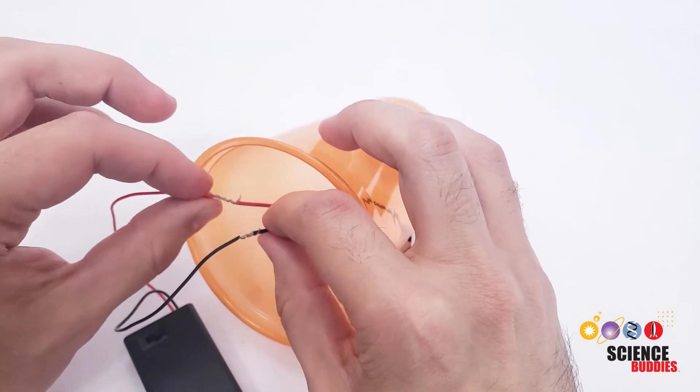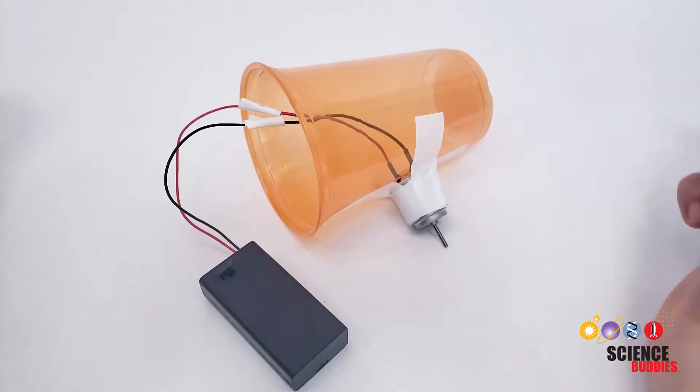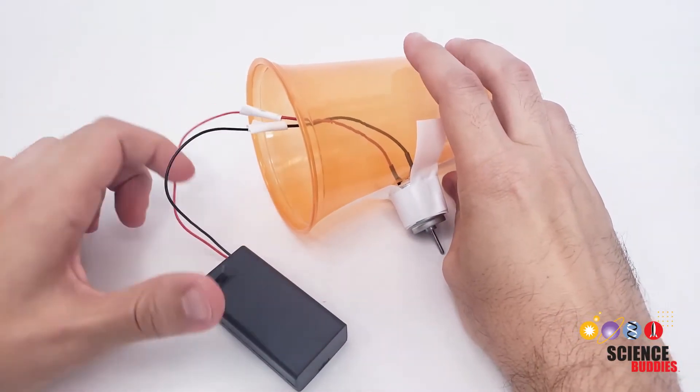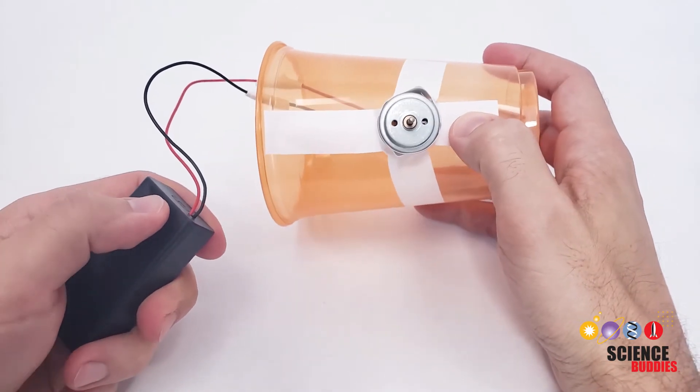But then again, we're going to wrap those with electrical tape because we don't want those to bump into each other and create a short circuit. Now I have finished making those connections and wrapping them in tape. As you can see here, when I turn the battery pack on, I should be able to hear the motor spin.